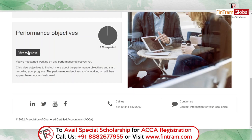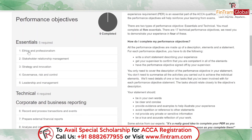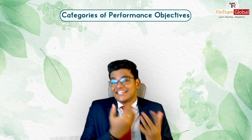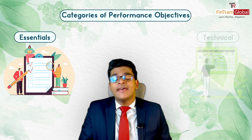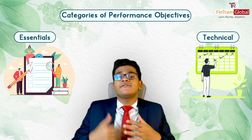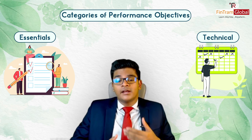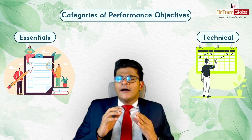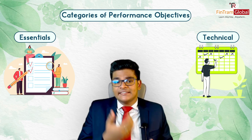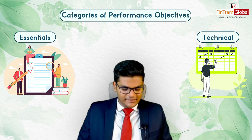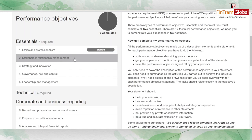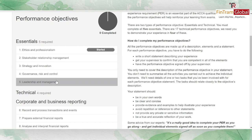Let's look at what performance objectives we need to satisfy to complete our PER. We need to satisfy nine performance objectives in total. There are two categories: essential performance objectives, which we must mandatorily satisfy, and technical performance objectives, which are optional and chosen depending on your field or relevant role. Five essential objectives must be satisfied.